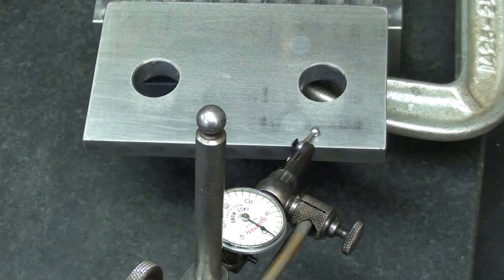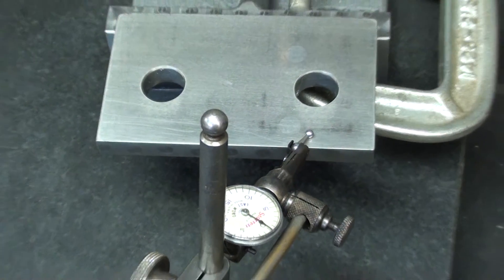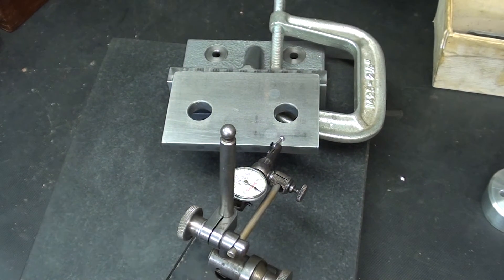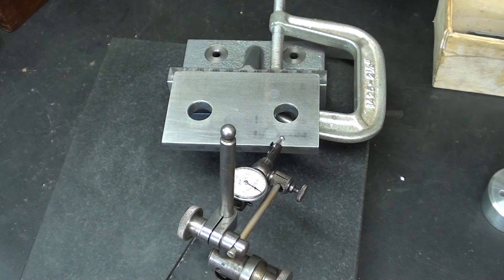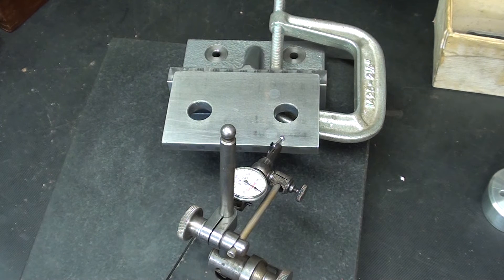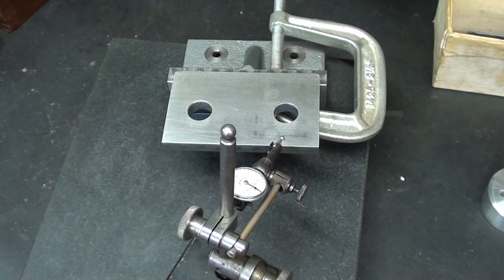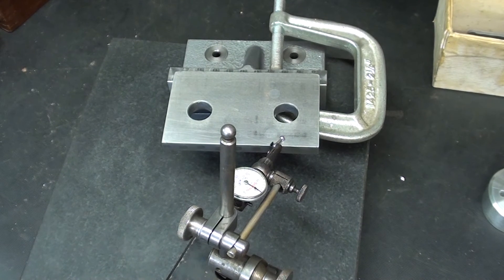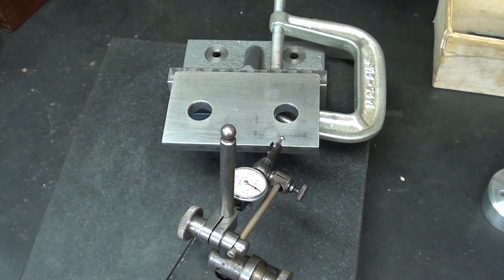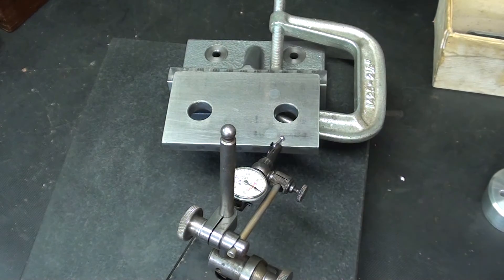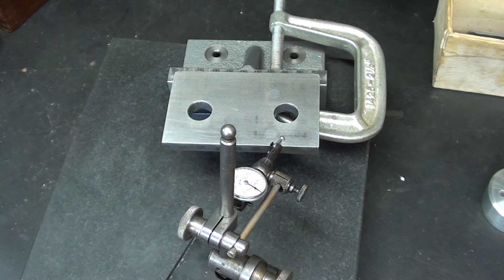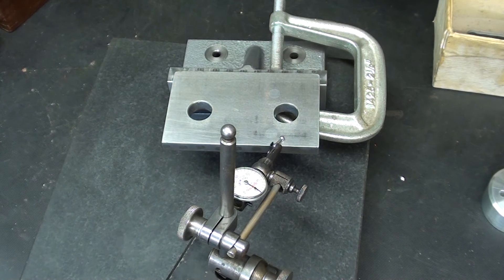I could go on all day here testing different things, but this gives you a little idea of what you can do in your shop to test for accuracy without a great deal of expensive equipment. Just a fairly cheap used indicator and a cheap surface plate. Hope you enjoy the video. See you next time.